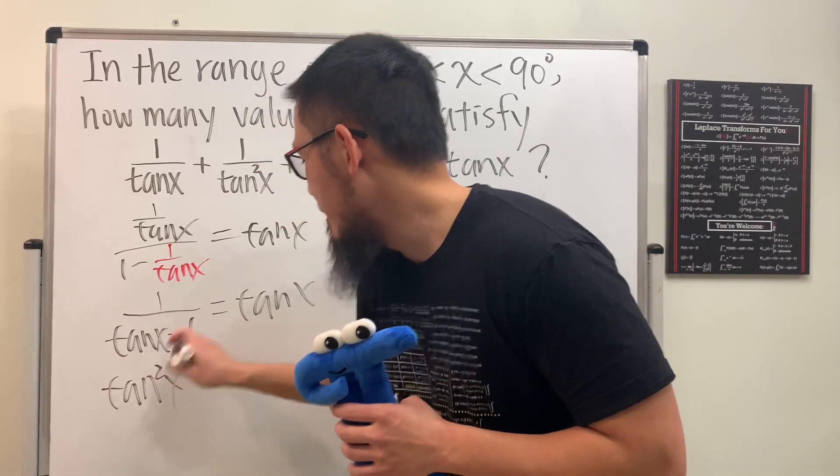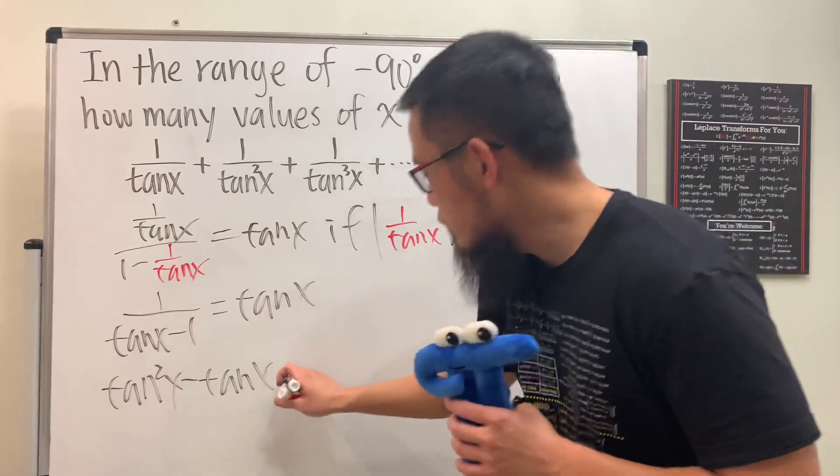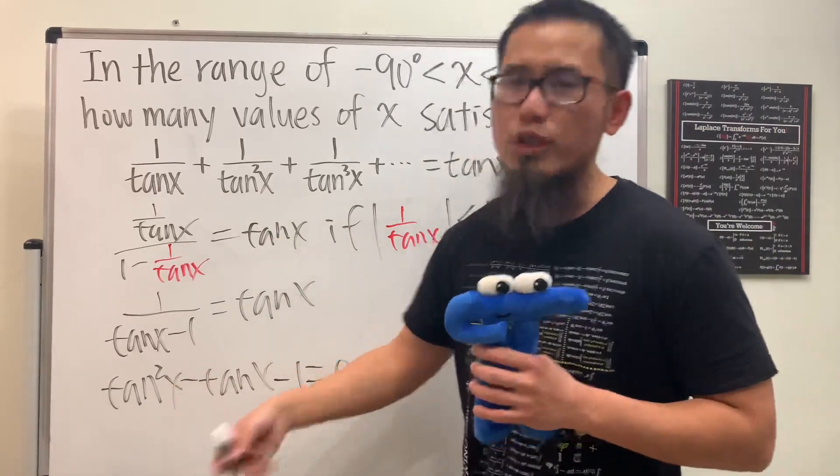And then minus tangent x, and this right here will be equal to 1. Bring the 1 to the other side, so we have minus 1 right here, and this is the quadratic equation in terms of tangent x.